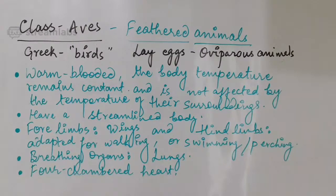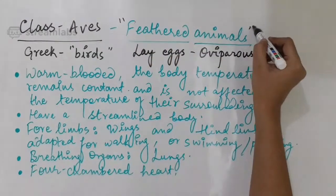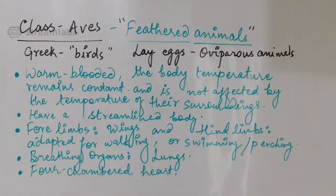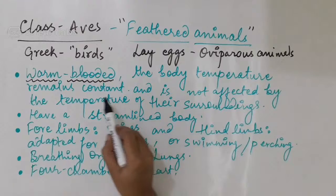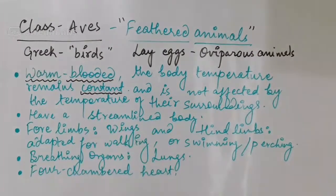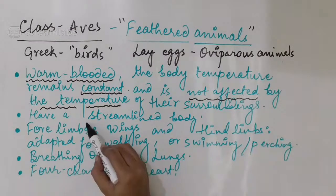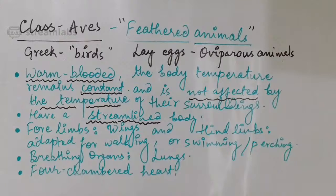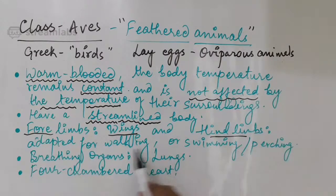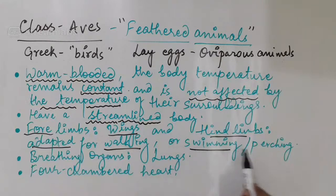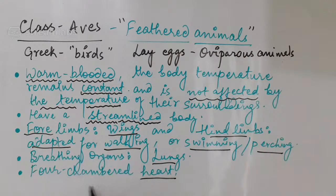These are called oviparous animals as they lay eggs. The important points for class Aves: these are called the feathered animals and are the only animals whose complete body is covered with feathers. They are warm-blooded, meaning they have a constant body temperature which is not affected by changes in temperature of their surroundings. They also have a streamlined body, just like fishes, which helps them fly freely in air. Their limbs are modified — forelimbs into wings, hind limbs adapted for walking, swimming, or perching. Breathing organs are lungs and their heart is four-chambered.